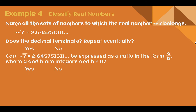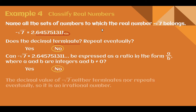Example 4: Name all the sets to which the negative square root of 7 belongs. When converted to a decimal, it's approximately 2.645751311... and it keeps going. Does the decimal terminate? No — the dots tell us it doesn't end. Does it eventually repeat? Looking through, no repeating pattern appears, so we assume it never repeats. Can it be expressed as a ratio of two integers? Since it does not terminate and does not repeat, we cannot write it as a fraction. Therefore, the negative square root of 7 is an irrational number — that's its only classification.